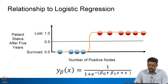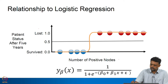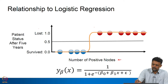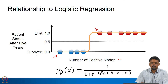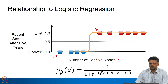Let us first look at the relationship to logistic regression. Consider this example where we are trying to determine whether a patient survived or was lost based on the number of cancerous nodules shown in the patient. If you use logistic regression, the idea is: if the output of the logistic function is greater than 0.5, we classify it as class 1, and if the output is less than 0.5, we classify it as class 0.